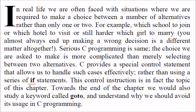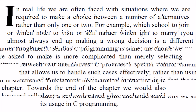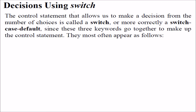We have already seen that we can have multiple if statements. Rather than using multiple if statements, we have something called switch and case. This is a control statement that allows us to make a decision from a number of choices given inside the switch. These choices are called cases, so we call this the switch-case construct or switch-case-default. All these keywords go together to make this switch case control statement.